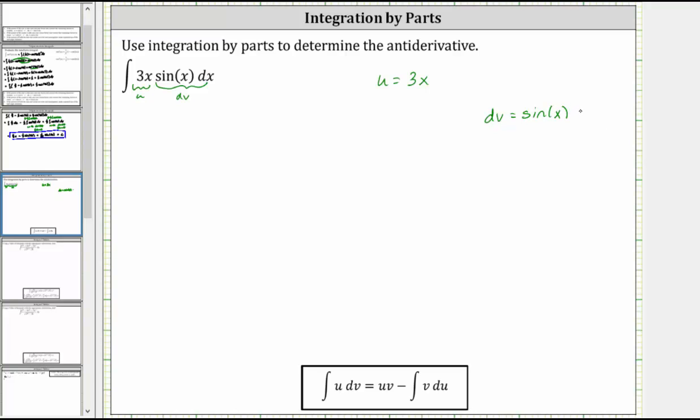Now we differentiate to find differential u and we integrate to find v. The derivative of 3x with respect to x is 3, and therefore differential u is equal to 3 dx.